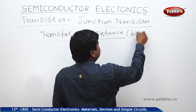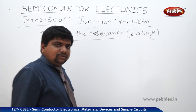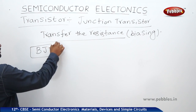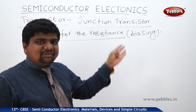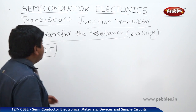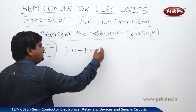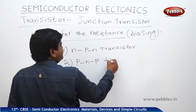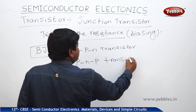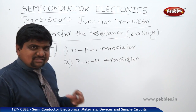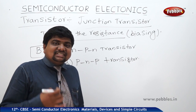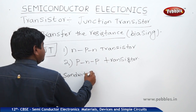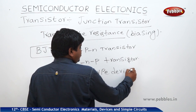Initially, the BJT — bipolar junction transistor — was considered the original transistor, but many more transistors have been discovered over time. There are majorly two types: the NPN transistor and the PNP transistor.